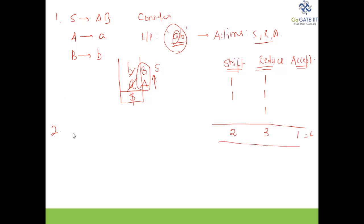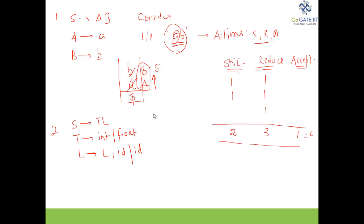Let us consider one more example. The grammar is: S → TL, T → int | float, and L → L comma ID | ID. The input string is 'int id comma ID'. We will consider the stack again with dollar as the last symbol.